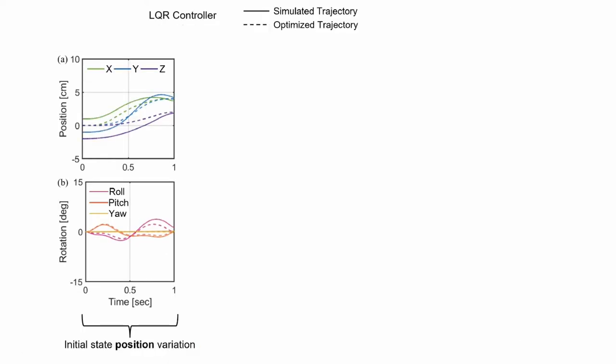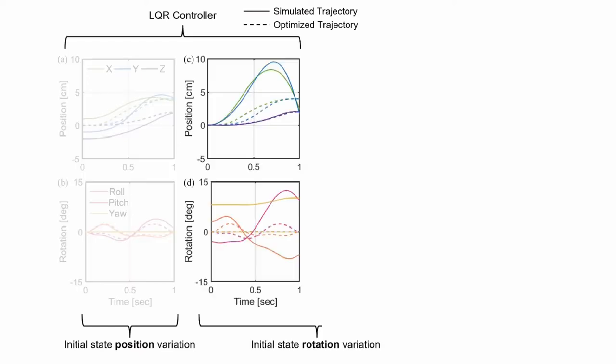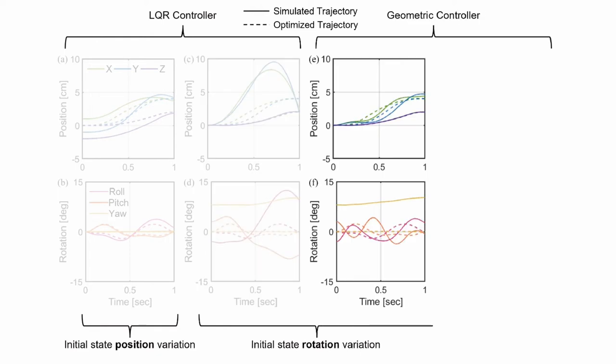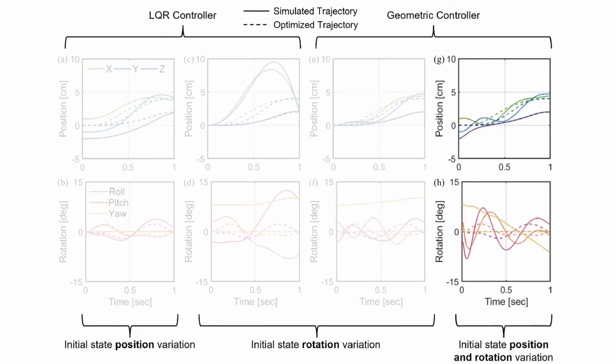With non-zero initial position, the LQR can still stabilize the trajectory. However, with non-zero initial orientation, the LQR will experience a hard time stabilizing it. But for a geometric controller, it can handle non-zero initial orientation. And the best thing is, when both initial position and orientation are off, the geometric controller can still bring the position to the target point.